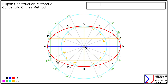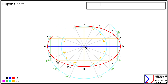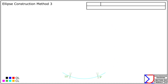This method is highly visual and clearly illustrates the proportional relationship between the major and minor axes. Ellipse construction method three. Finally, let's move on to the rectangle or oblong method for constructing an ellipse with a major axis of 130 millimeters and a minor axis of 82 millimeters.